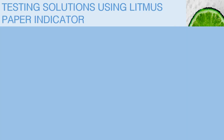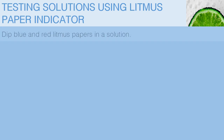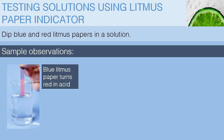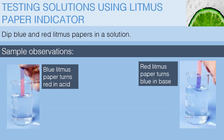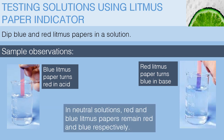Next, we have litmus paper indicator. Since we have been using solutions and this is paper, the procedure will be different. Here you just dip blue and red litmus paper in a solution. The results are as follows: blue litmus paper turns red in an acid, while red litmus paper will turn blue in a base. In neutral solutions, red litmus paper and blue litmus paper remain red and blue respectively.